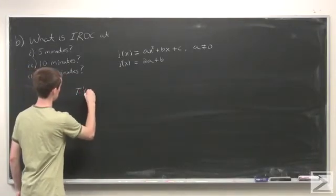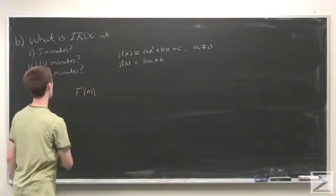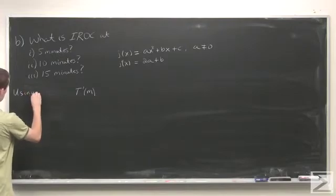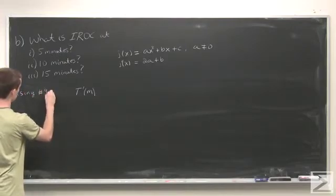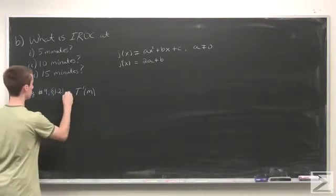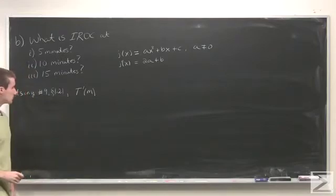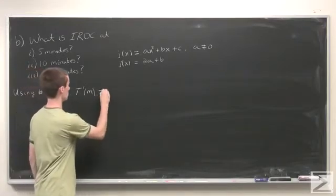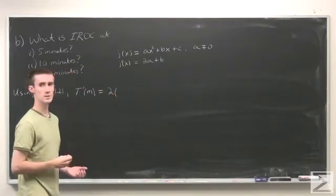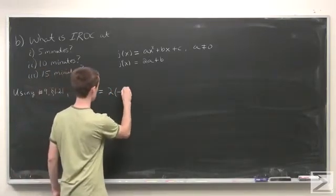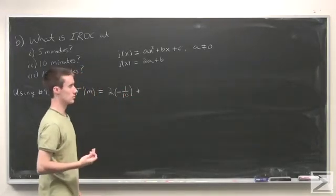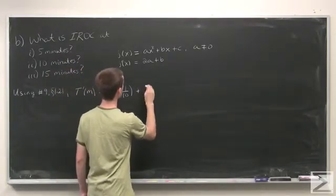This formula will make this problem easier. Using problem 9 from section 1.2.1, T'(m) equals 2 times a, where a is -1/10, plus b, where b is 4.